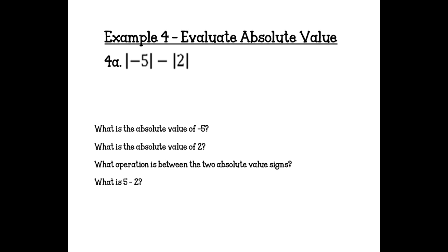Example 4: Evaluate absolute value expressions. 4A — the absolute value of negative 5 minus the absolute value of 2. First, the absolute value of negative 5 is 5. The absolute value of 2 is 2. The operation between them is subtraction. So 5 minus 2 equals 3. That is the answer.